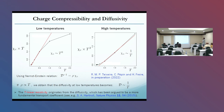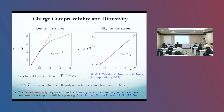An important thing I want to emphasize: we can also measure charge compressibility and diffusivity. At low temperatures, the charge compressibility does not depend on temperature. At high temperatures, we get a one-over-T dependence for this quantity. We can use the Nernst-Einstein relation, which connects the diffusivity to the charge compressibility and the DC resistivity.